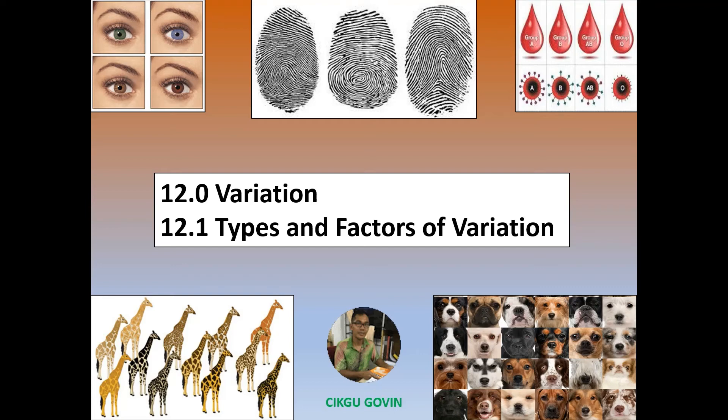Hello my students, I'm your biology teacher, Chikgu Grovins. Our topic today is chapter 12, variations, and our subtopic is 12.1, type and factor of variations.